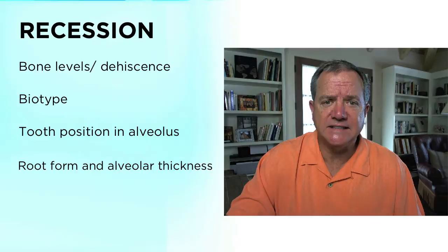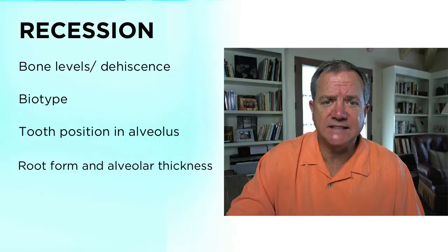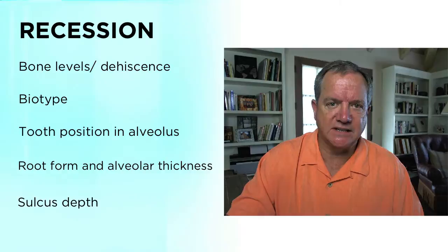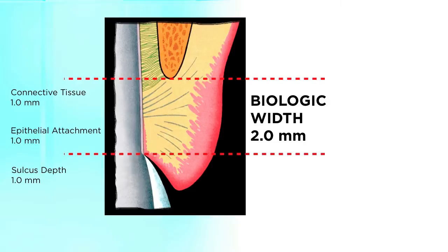The bottom line for myself — the thing I tend to use most to help me predict what's going to happen — is actually sulcus depth. If we go back and think about classic biology, most of us learned from a classic paper by Gargiulo, Wentz, and Orban written back in 1961. They looked at the human periodontium and the attachment of how the gingiva attaches to the tooth above the crest of bone. They identified that the average person has a connective tissue attachment of one millimeter in height.